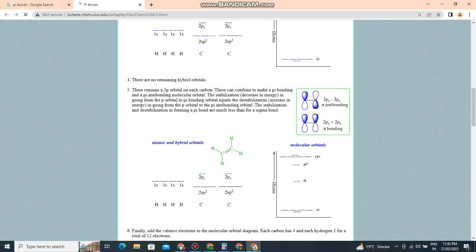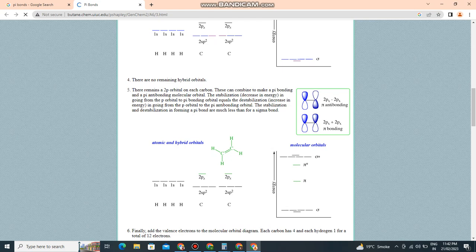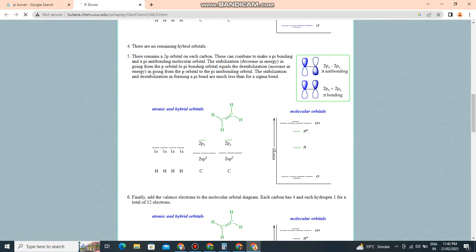There are no remaining hybrid orbitals; there remain two p orbitals, one on each carbon. These can combine to make a pi bonding and pi antibonding molecular orbital. The stabilization in forming the pi bonding orbital equals the destabilization in forming the pi antibonding orbital.